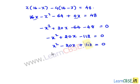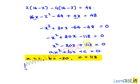Comparing this equation with the standard equation ax² plus bx plus c equals 0, we get a is equal to 1, b is equal to minus 20, and c is equal to 112.